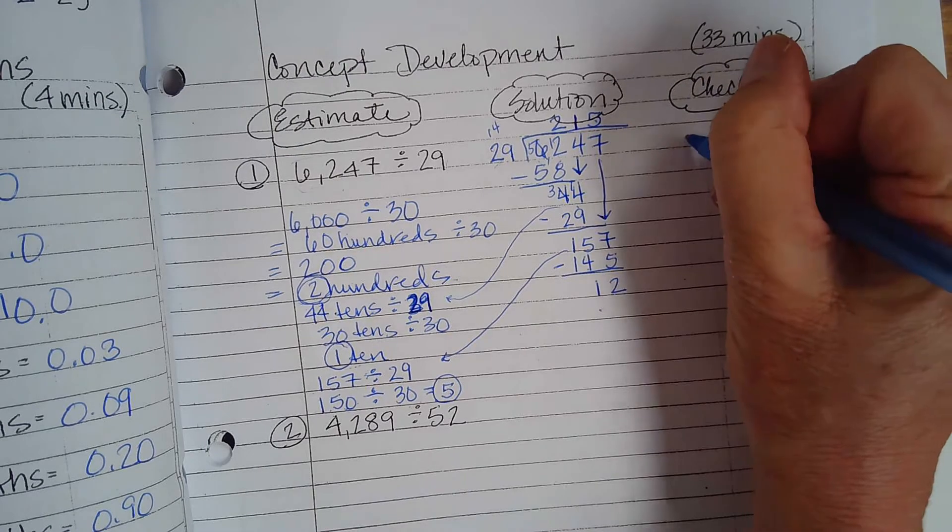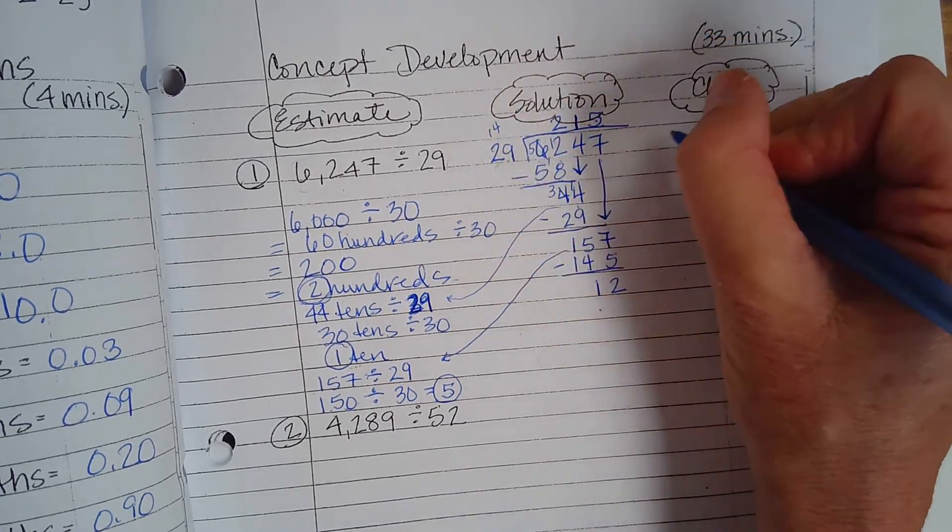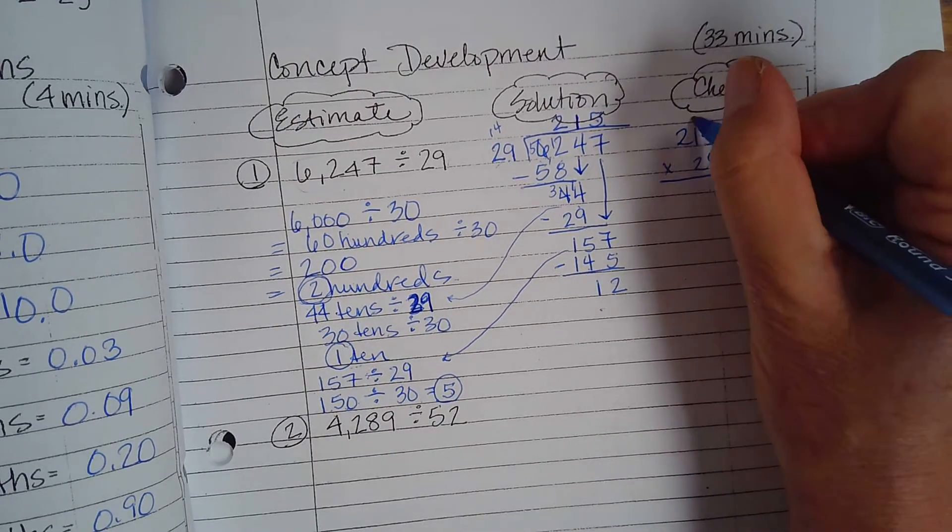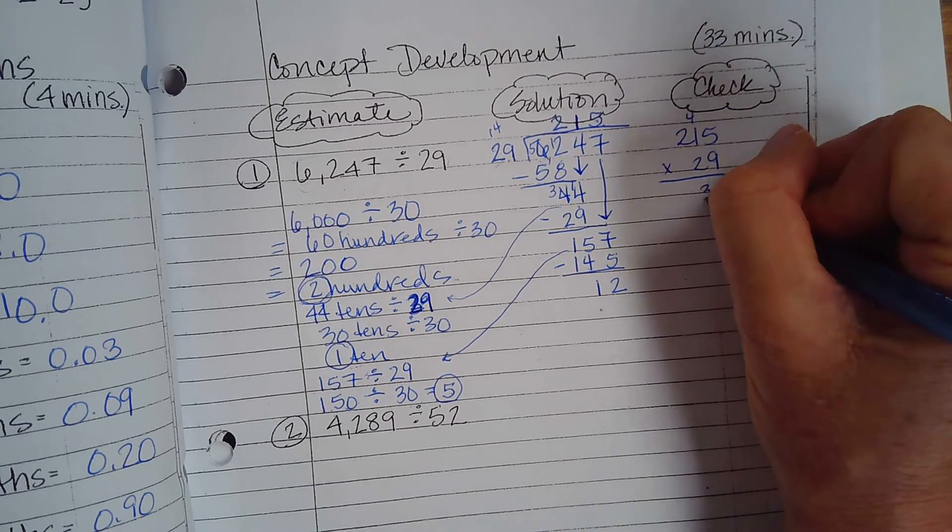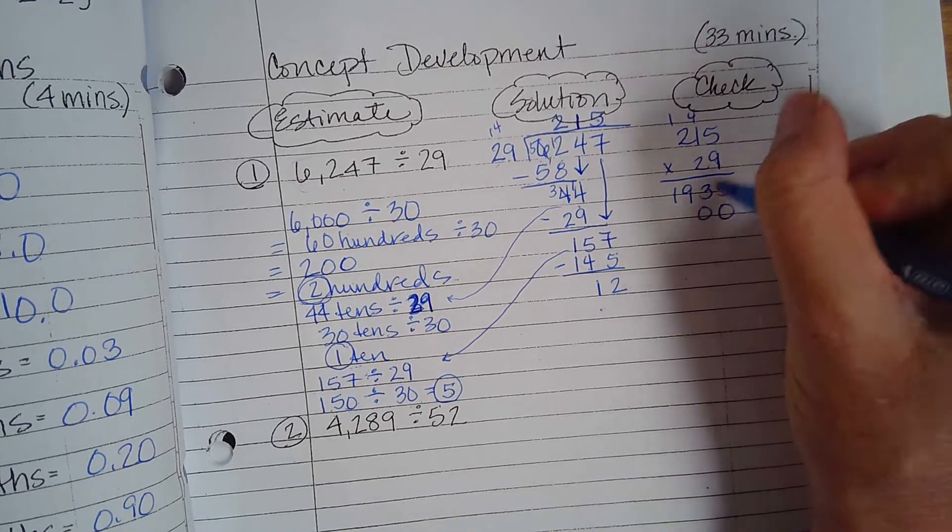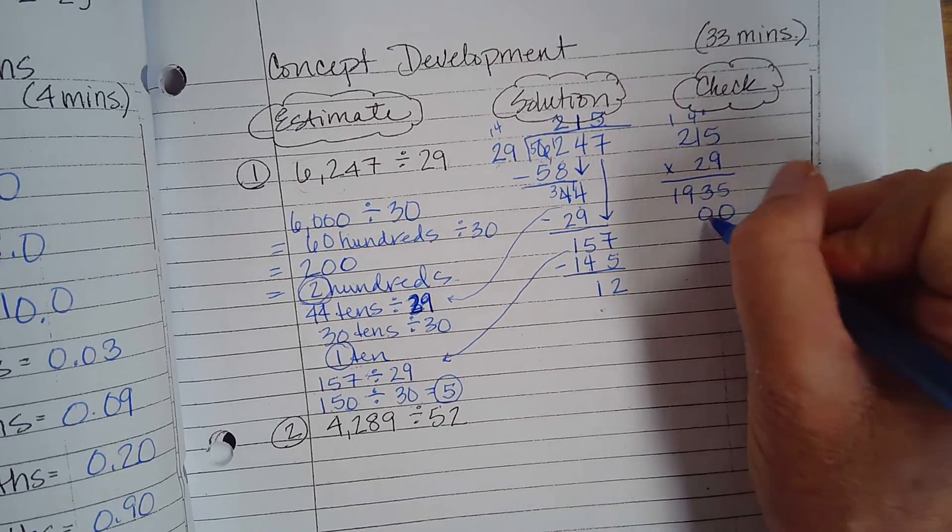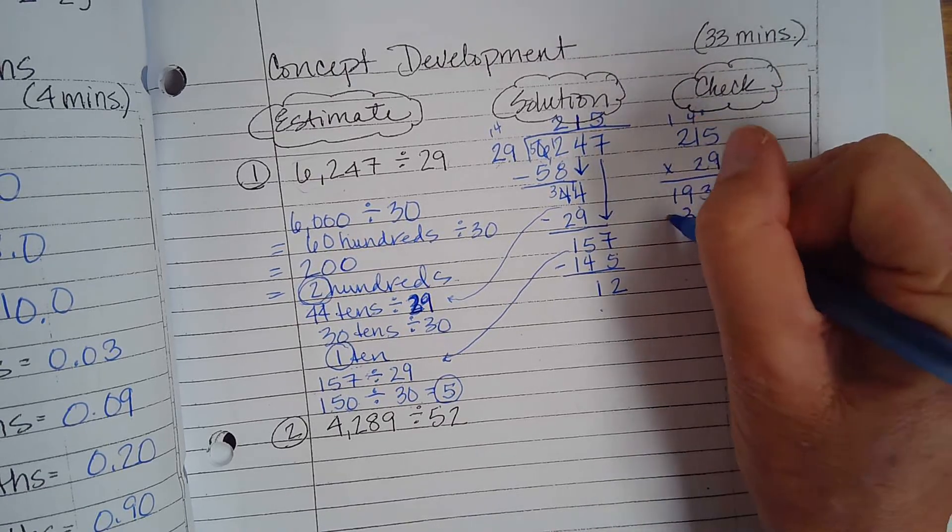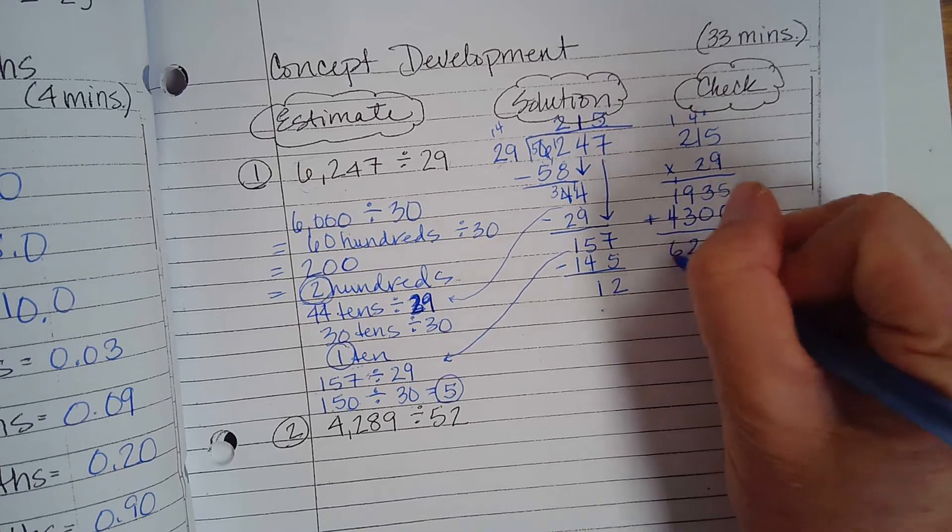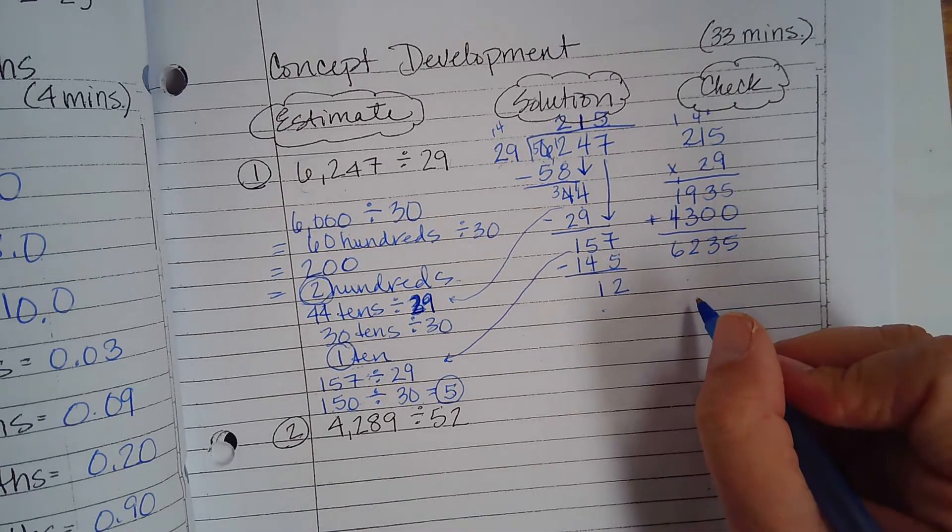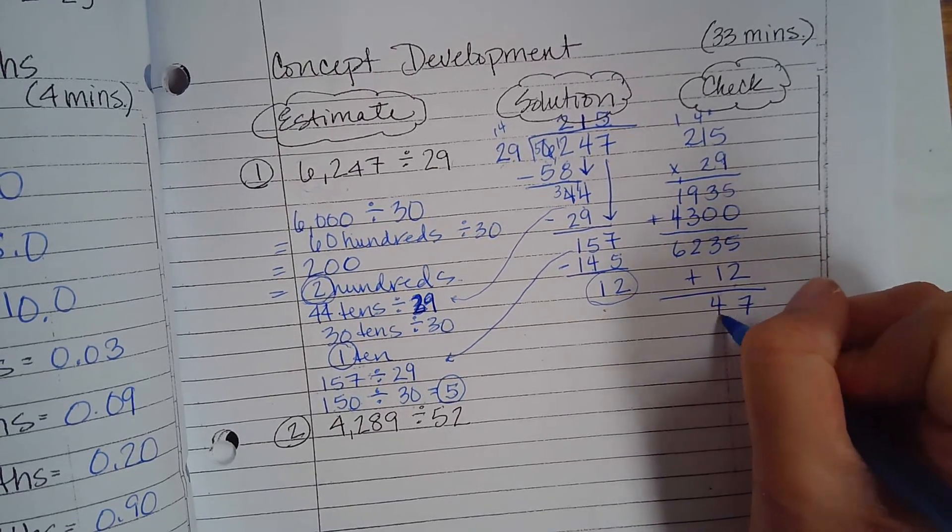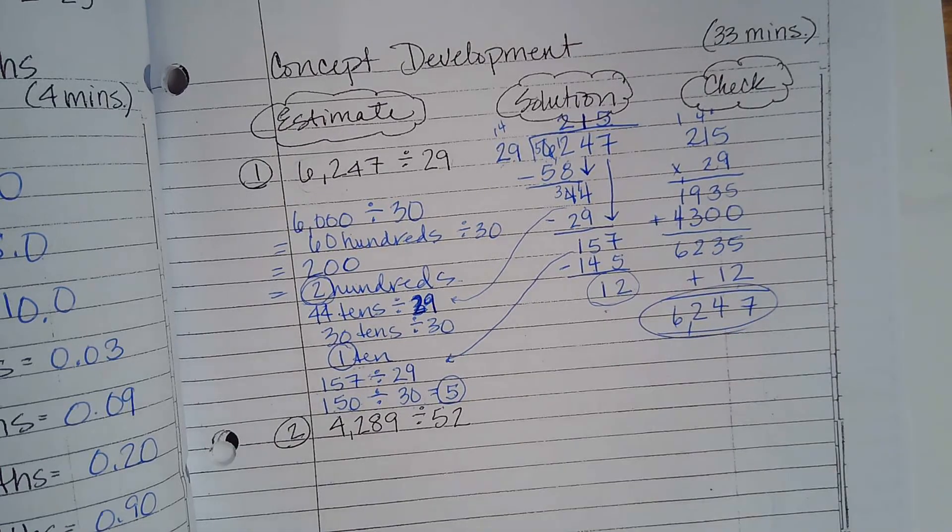Now let's check: 215 times 29. 9 times 5 is 45. 9 times 1 is 9. 9 times 2 is 18, which is 19. Add the 0. 2 times 5 is 10. 2 times 1 is 2 plus 1 is 3. 2 times 2 is 4. We end up with 6,235. But we need to add the remainder, right? That's what we're doing today.